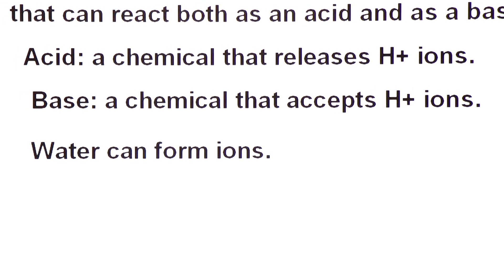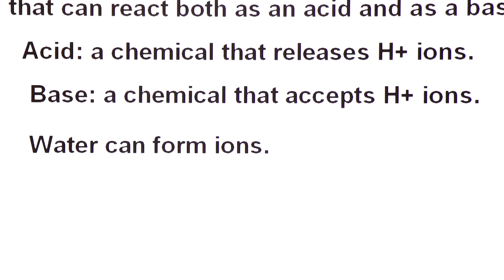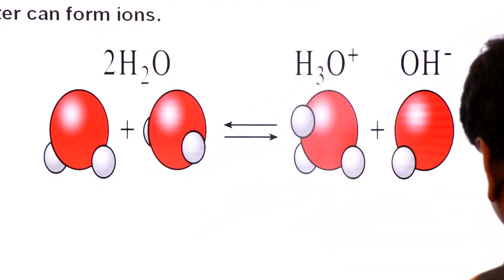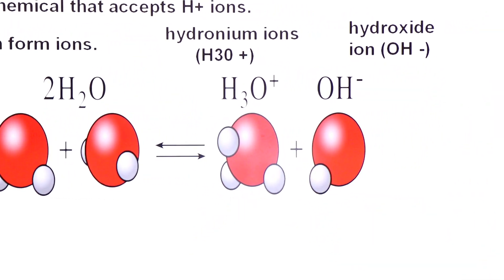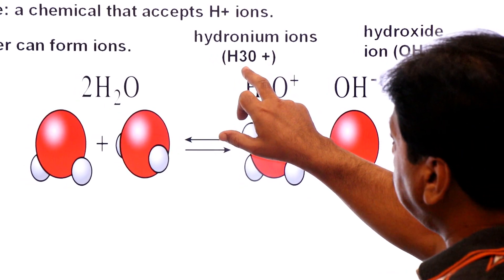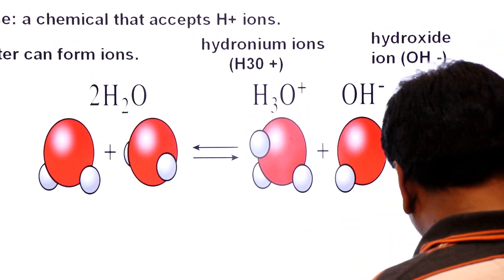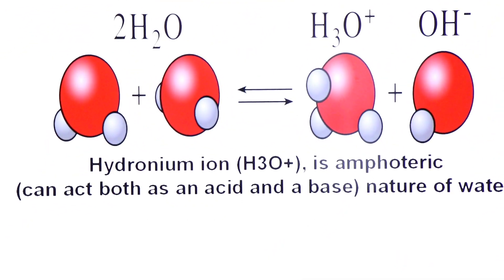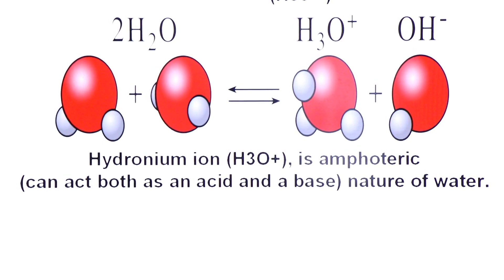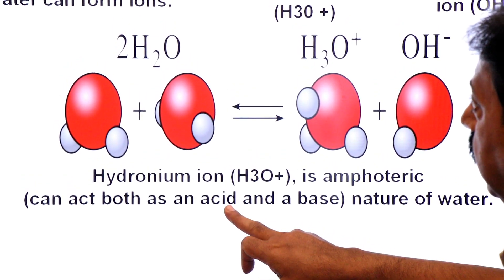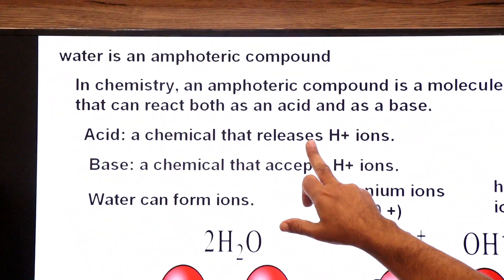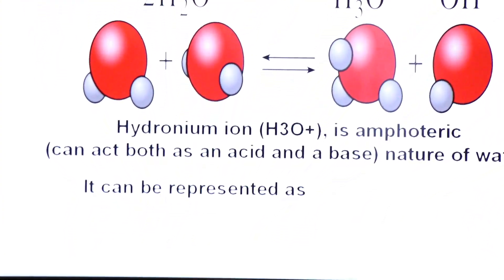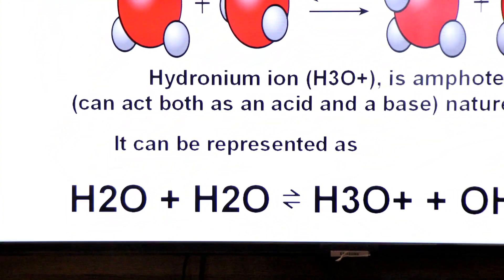An acid is a chemical that releases protons or hydrogen ions. A base is a chemical that accepts protons or hydrogen ions. Water ki ionization mein isse ions milte hain - hydronium ions aur hydroxide ions. Yeh jo hydronium ions hote hain, in ki amphoteric nature hoti hai. Hydronium ion is amphoteric, can act as both acid and base. Jab dear students hum isko acid kahenge to wo release karega proton, aur jab hum isko base kahenge to accept karega proton.